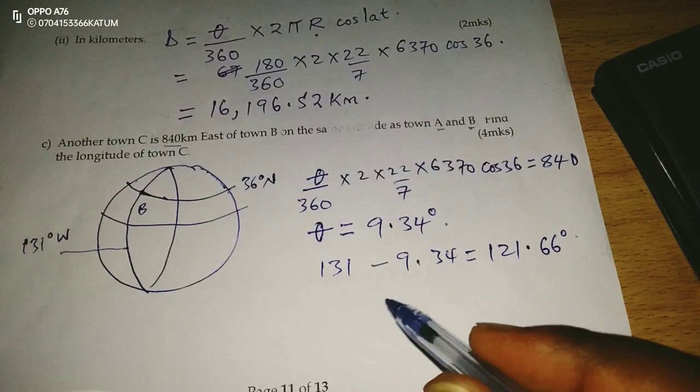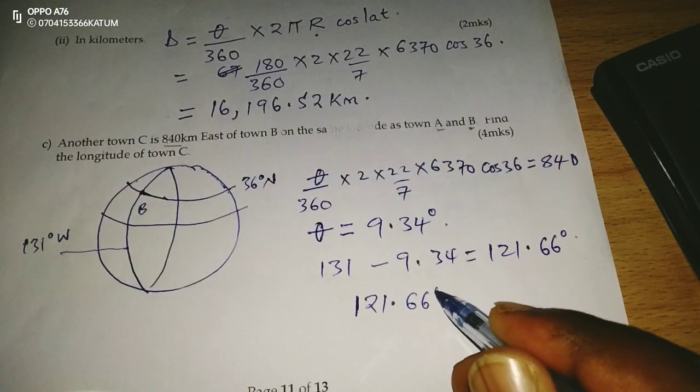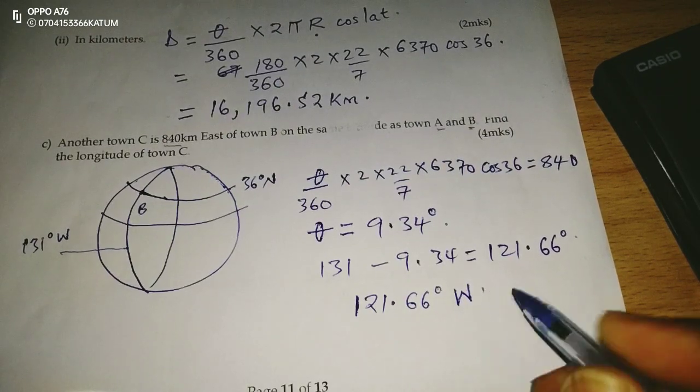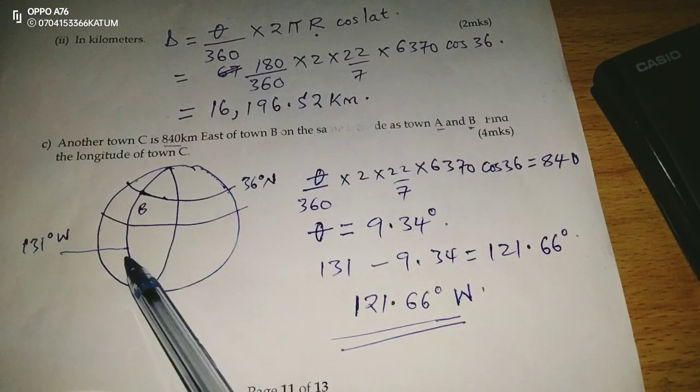the longitude of town C is going to be 121.66 degrees, still in the west.